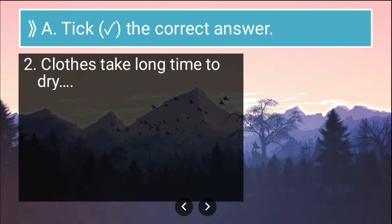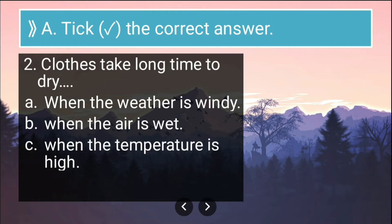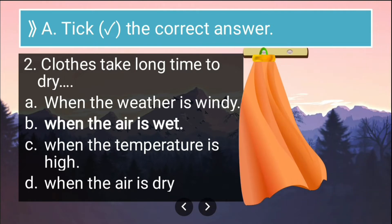Next question: clothes take a long time to dry — the options are when the weather is windy, when the air is wet, when the temperature is high, when the air is dry. The correct answer is when the air is wet, because when the air is wet there is a lot of moisture in the air, and in that case clothes take a long time to dry.